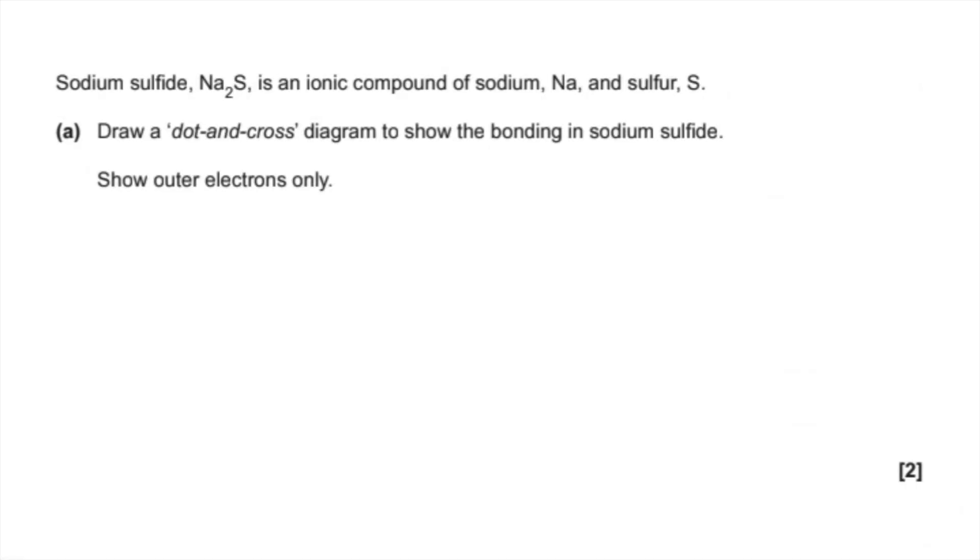So part A, dot and cross diagram to show the bonding in sodium sulfide. We're told it's ionic, but sometimes they don't always tell you, so if it's a metal and a non-metal, it's going to be ionic. So we're going to need square brackets, charges outside, and so on. So here it is.